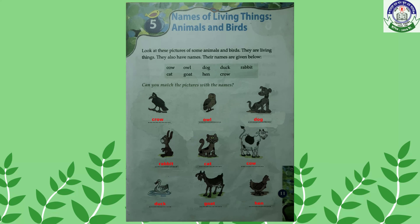Unit 5: Names of Living Things — Animals and Birds. Look at the pictures of some animals and birds. They are living things and they also have names. Their names are given below. In this box there are some names of animals and birds, so you have to write the name under the picture. The first one is crow — write crow here.